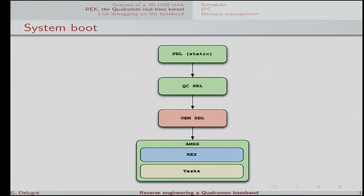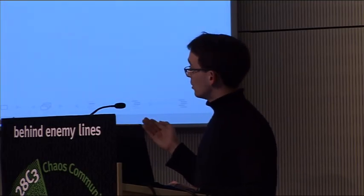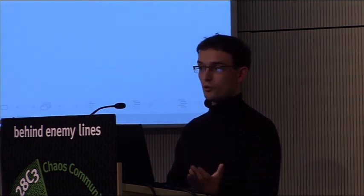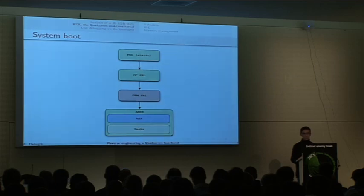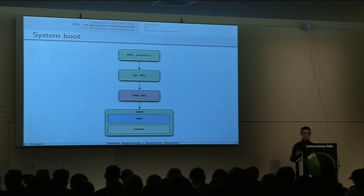How does the system boot? You have a primary bootloader stored in ROM, which is immutable, which reads from NAND the Qualcomm secondary bootloader named QCSBL. This SBL is supposed to load another SBL named OEM SBL, meaning the phone manufacturer can implement their own bootloader. For example, on HTC phones you have Hboot, which is the OEM SBL — it gives you a menu and splash screen. Then it loads the AMSS operating system, which is what really runs in the baseband. Between each of these transitions you can have cryptographic signatures. On this specific USB stick model there is no OEM SBL — QCSBL loads AMSS directly with no secure boot at all, so there is no signature.